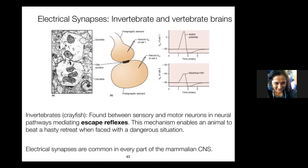Electrical synapses can be found in parts of the nervous system where things need to be fast — for example, they're very common between sensory-motor neurons and muscle fibers, mediating escape reflexes. Electrical synapses are also common in every part of the mammalian brain. Electrical synaptic transmission is fast, reliable, probably energetically more efficient, and allows sub-threshold signals to be transmitted.